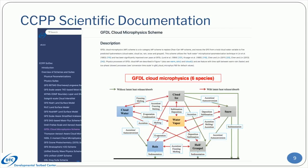The scientific documentation contains more information than the metadata-generated contents. For example, the GFDL microphysics scientific documentation includes the scheme development history, hydrometeor interaction diagram, and formulas for specific processes. These contents are automatically generated through encoded comments by the Doxygen application.